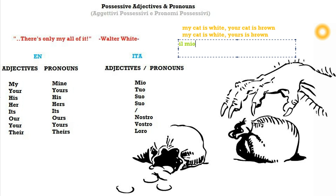In Italian, every time you have a possessive adjective or pronoun, you need the article. So 'il mio gatto è bianco.' Obviously you have 'mio' instead of 'mia', and 'bianco' instead of 'bianca', because 'gatto' is masculine — so all the adjectives and words referring to 'cat' have to be in their masculine form. 'Il tuo gatto è marrone.'